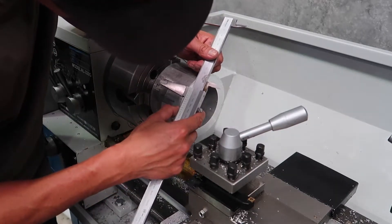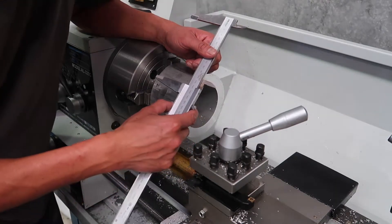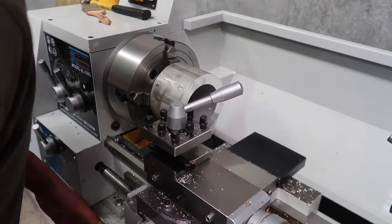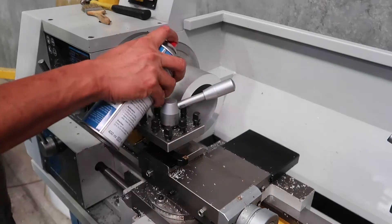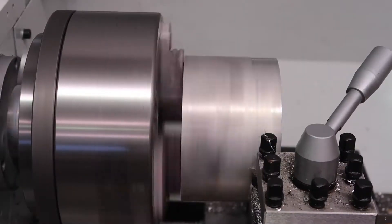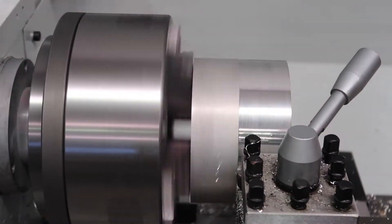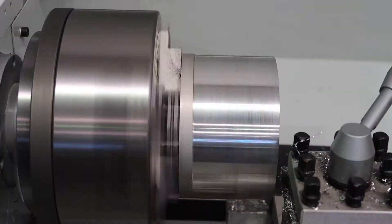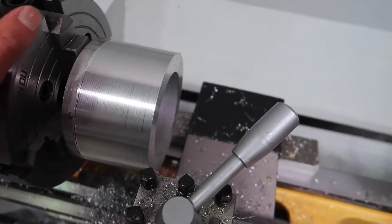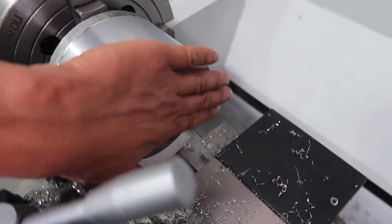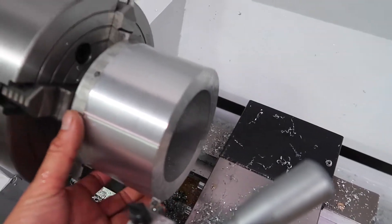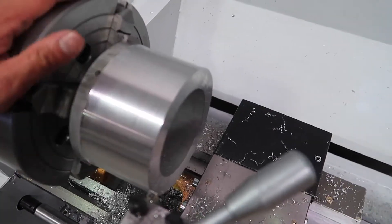So that's 128 and a bit. I'm going to take it down to 128. All right, so that's the bearing block so far. The face has been taken back to be square.